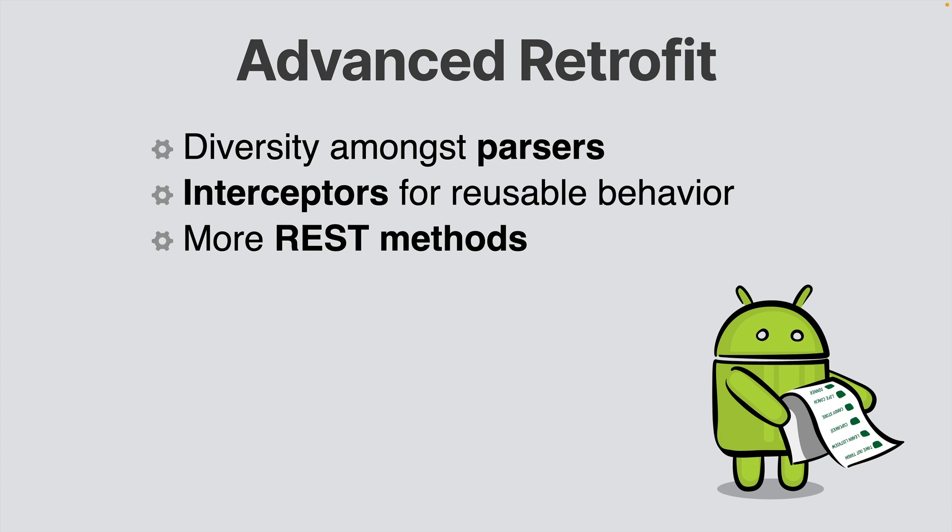In this part, you will learn how to work with a parser for both Kotlin and Retrofit. You will also see how to use interceptors to add passive behavior to every single request, to avoid having to do it manually every single time you connect to the API.